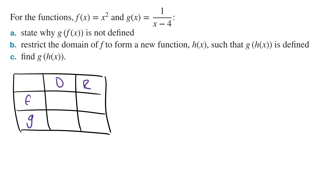f(x) is a parabola. Sketching f(x), the domain is going to be all real numbers, and the range is going to be from 0 to infinity. Writing this in the table, the domain is all real numbers, and the range is from 0 to infinity.